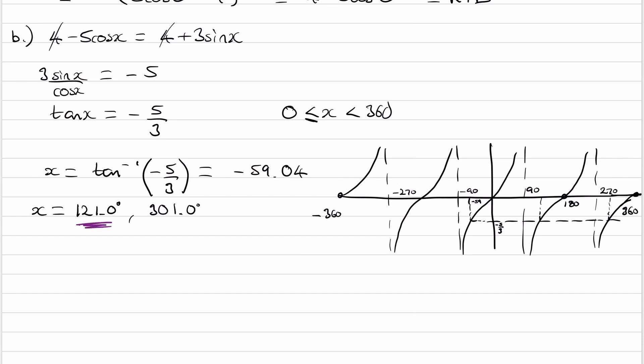So for tan, whenever you have a tan graph and you're trying to solve it in a particular domain, you don't need to worry usually about sketching the graph. You can just add or subtract 180, as many times as you need to, to your principal value, which is the first value you get in your calculator. And that should give you all of the angles in your domain.